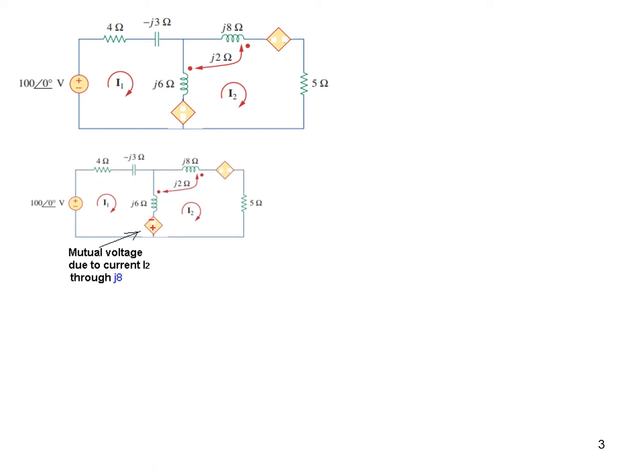And now this voltage is due to mutual current flowing through this, mutual voltage due to current I2 flowing through J8. So I2 flowing through this will induce a voltage here. So first of all we will mark the polarity. Now you see this current I is entering the non-dotted terminal. Therefore, the non-dotted end of this coil will be positive. That means the bottom end will be positive. So we have marked the polarity and then we will put the value of this voltage. Now that will again be the mutual inductance J2 multiplied by I2. And so this is the voltage induced.